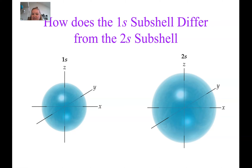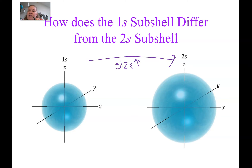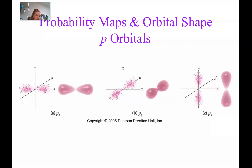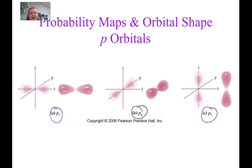The difference between a 1S and a 2S is two things: size — we can see in the picture that the size increases from 1S to 2S — and energy, which is also increasing (though we can't see that in the picture). For the P orbitals, a P subshell contains three orbitals: Px, Py, and Pz, located on the X, Y, and Z axes. These three orbitals all have the same shape and energy and size — they're just pointed in different directions.